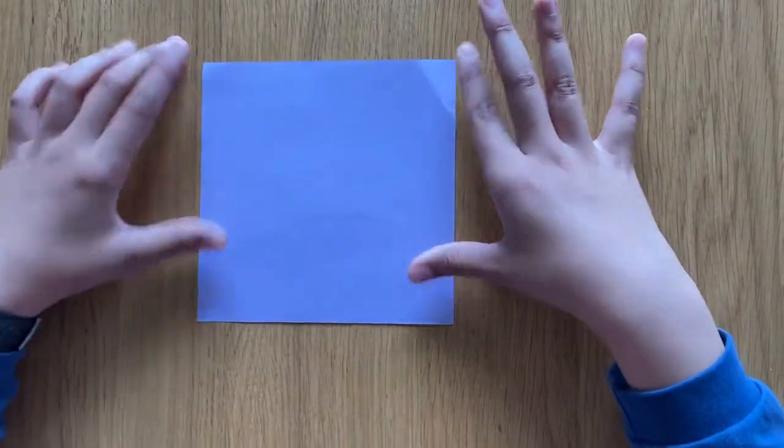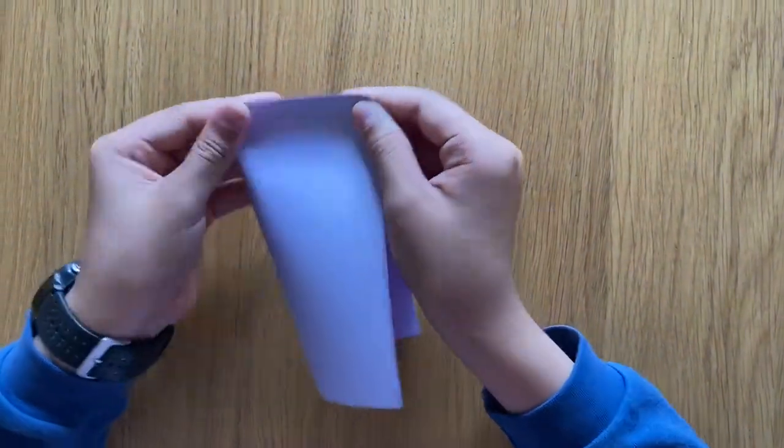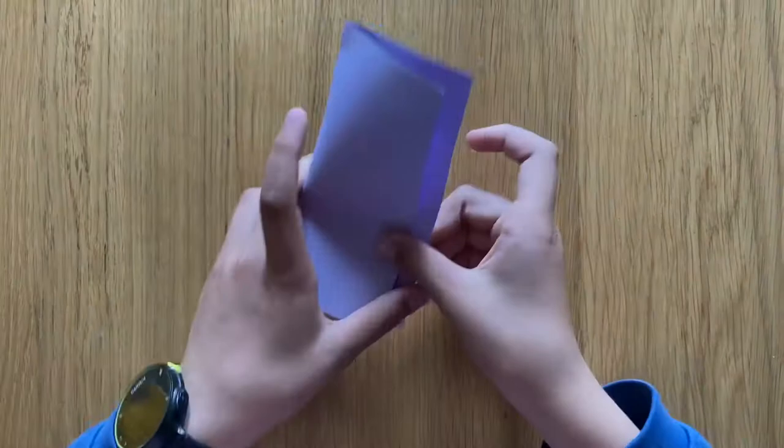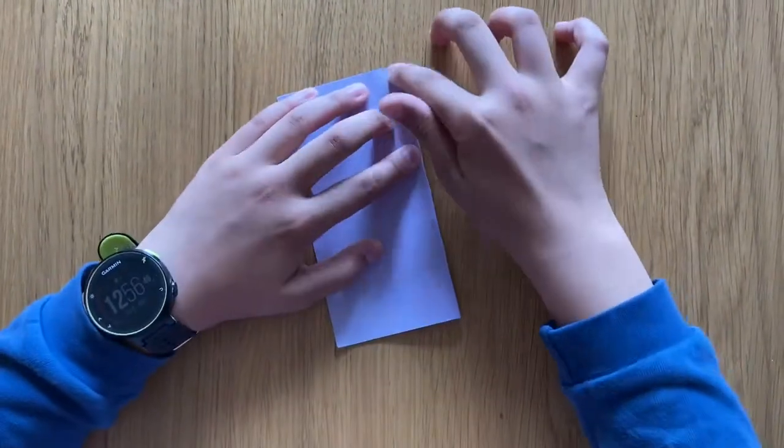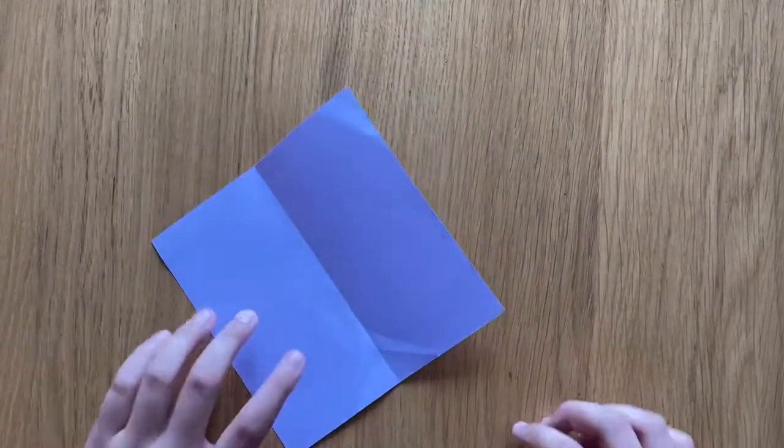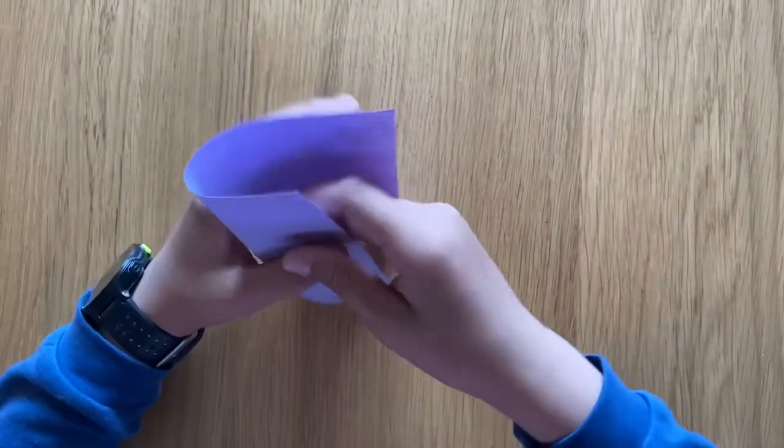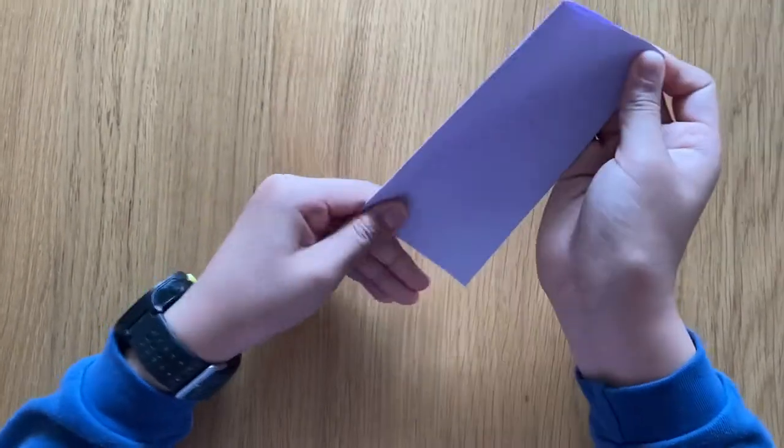First, you need to fold it into a four, just like that. Open it up. Wait, you have to do this when you are folding it or you can't quite see the line. Now you can see the line clearer.